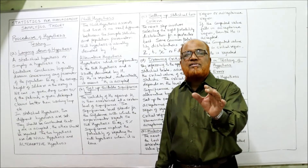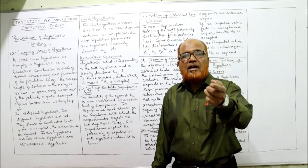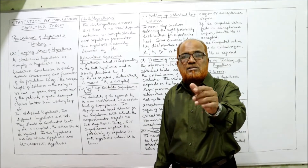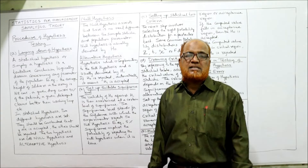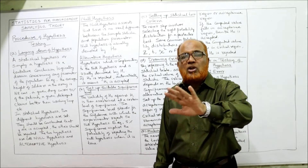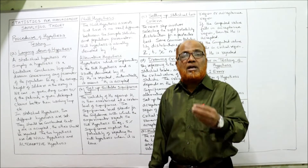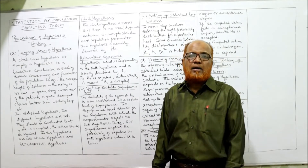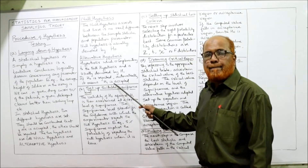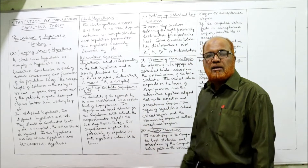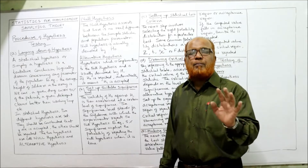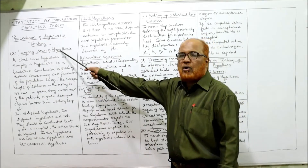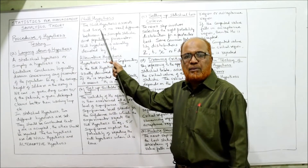The alternative hypothesis, denoted by H₁, is the opposite of the null hypothesis. Where the null hypothesis states there is no difference, the alternative hypothesis states that yes, there is a significant difference between the population parameter and the sample statistic — meaning the sample does not correspond with the population. So in every problem, the first step is to lay down both the null hypothesis H₀ and the alternative hypothesis H₁.